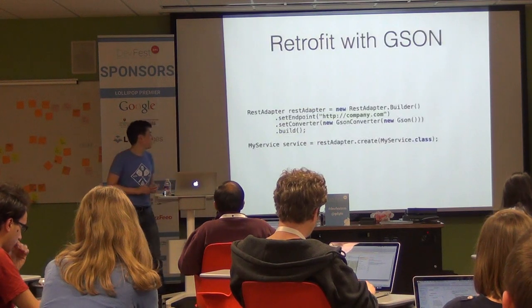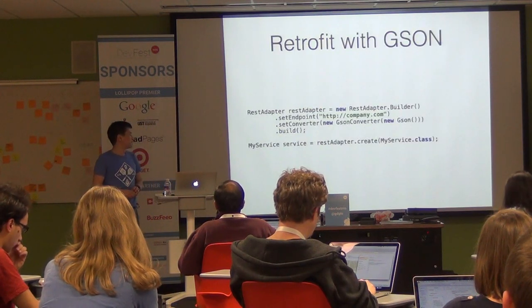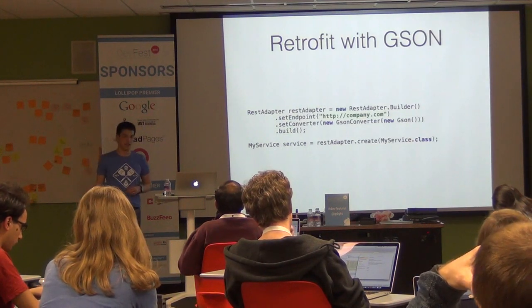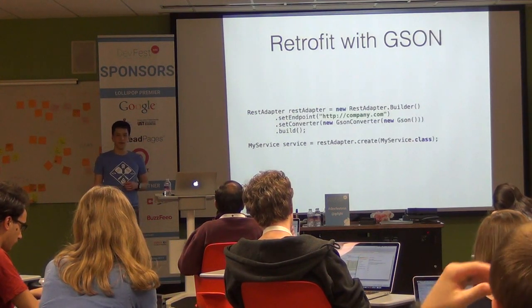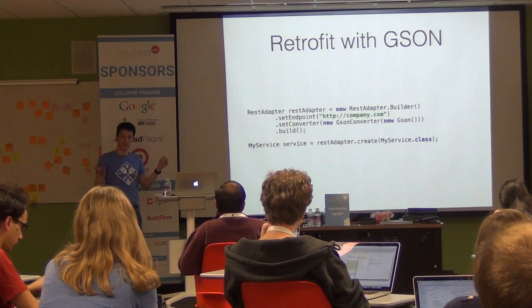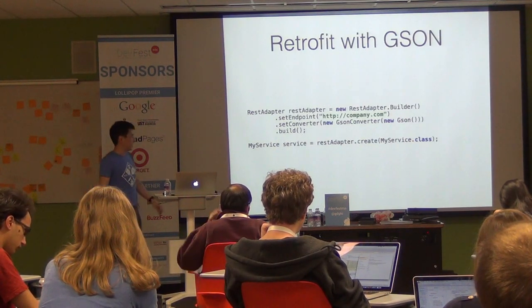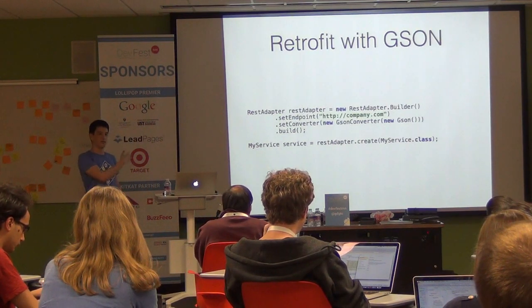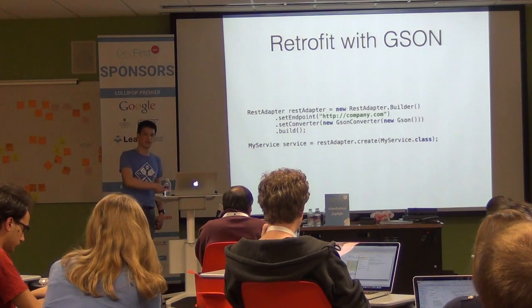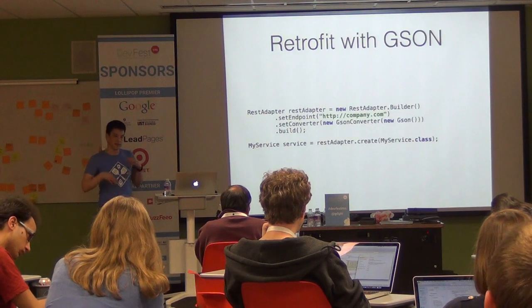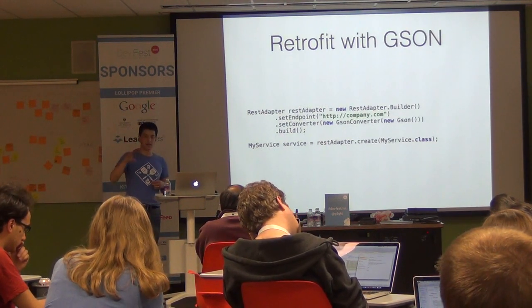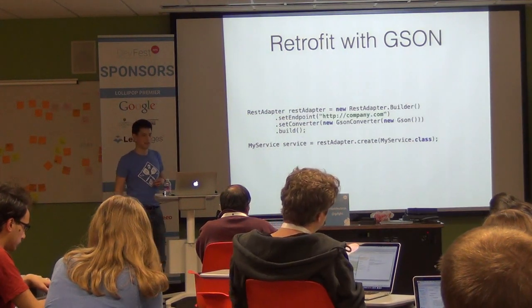Retrofit fits in very well with GSON. When creating your RestAdapter, instead of just calling build after setting the endpoint, you can call setConverter() and pass in a GsonConverter — because these libraries know that each other exists. The GsonConverter takes your GSON instance and uses it for converting all responses. So if I declared I'm getting a list of Cards back, and I've set up the correct type adapters, the converter handles all the parsing automatically.